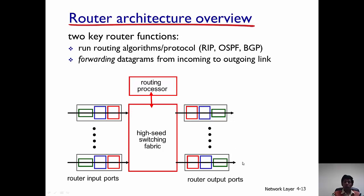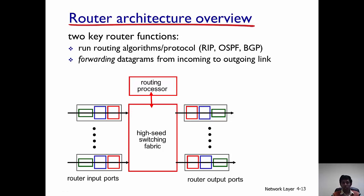A router has two key functions: routing and forwarding. Routing is mainly determining the path between a source and a destination, and there are many routing algorithms like RIP, OSPF, and BGP. We'll get a flavor of routing algorithms when we talk about Dijkstra's and Bellman-Ford's algorithms later in this class. Forwarding is actually taking a datagram from the input port of the router and directing it to the appropriate output port, and that is done with the help of the switching fabric.